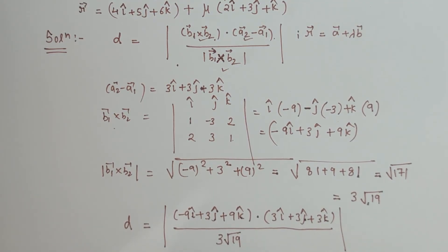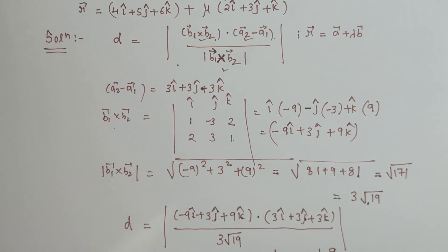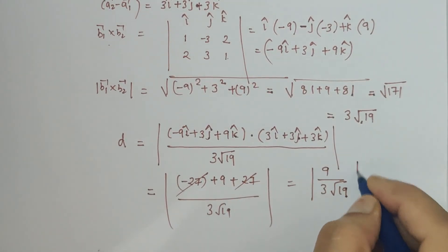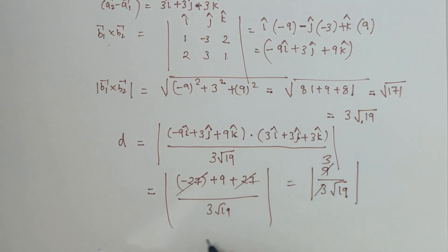We are left with magnitude of 9 upon 3 under root 19. So it is 3 upon under root 19, so the answer is 3 upon under root 19 units.